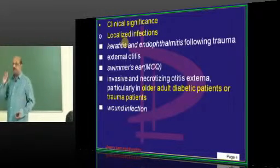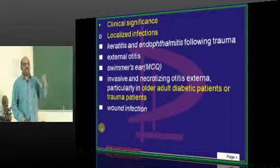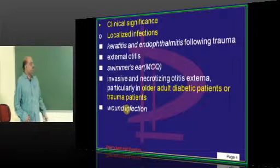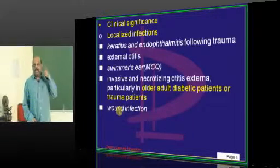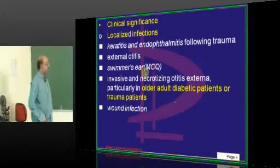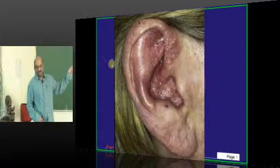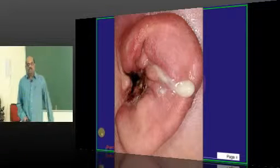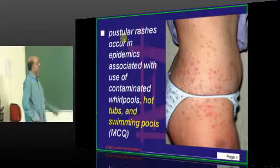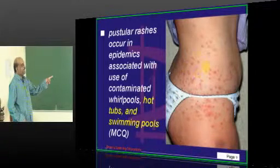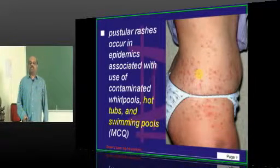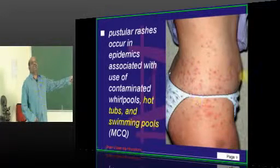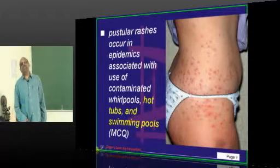Important infections of Pseudomonas include: keratitis and endophthalmitis after trauma; external otitis. In elderly diabetic patients or after trauma, there can be necrotizing otitis externa called malignant otitis externa, which is due to Pseudomonas — this is frequently asked in exams. If you enter a swimming pool or hot tub and enjoy the massaging jets, you may develop hot tub folliculitis, which is also due to Pseudomonas.